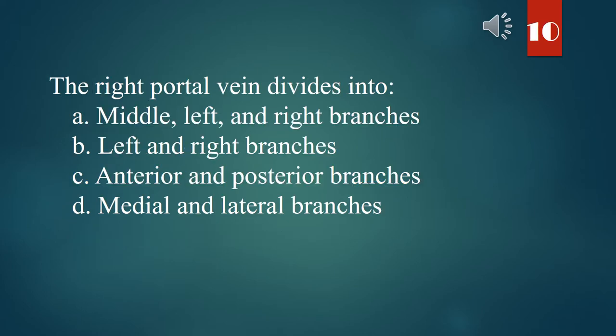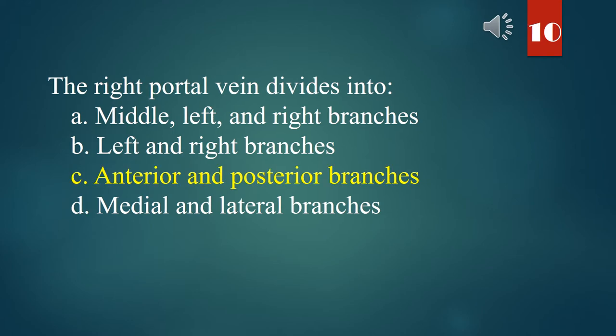The right portal vein divides into: A. Middle, left, and right branches. B. Left and right branches. C. Anterior and posterior branches. D. Medial and lateral branches. The answer is C. Anterior and posterior branches.